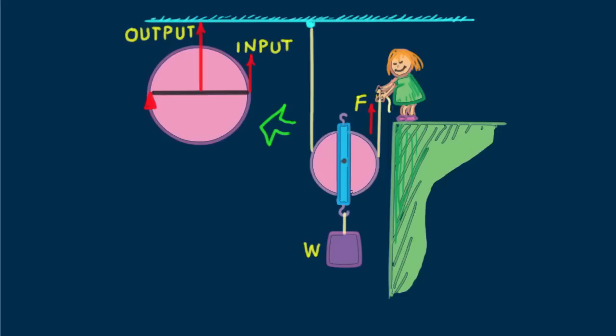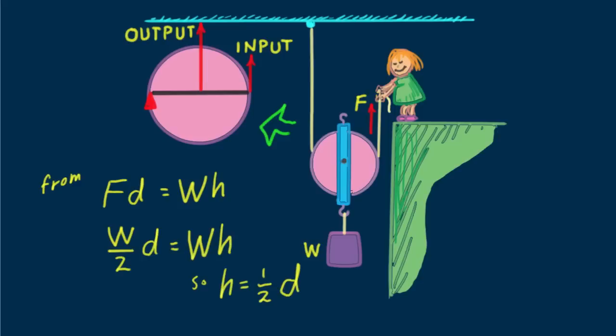So, the tension in the rope, which is the same everywhere along the rope, is only half W. And we see that the height to which the load is raised is F times D equals W times H. W over 2 times D equals W times H is equal to half Nellie's pulling distance D.